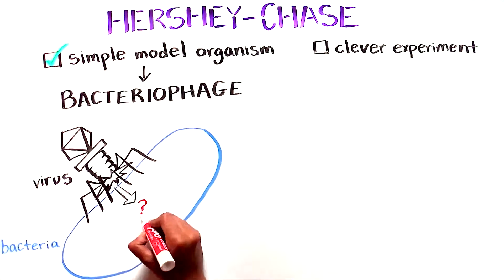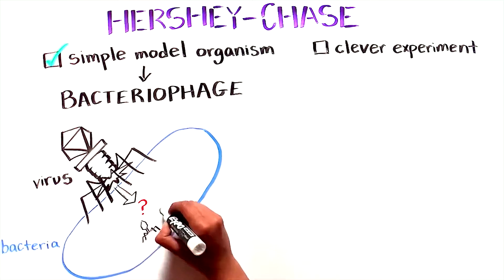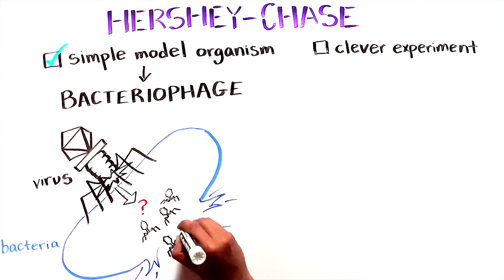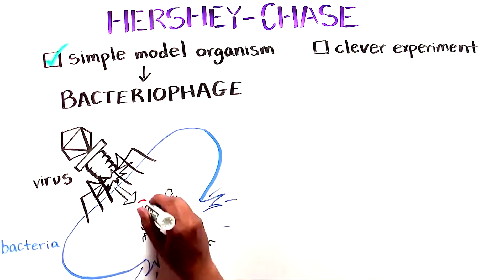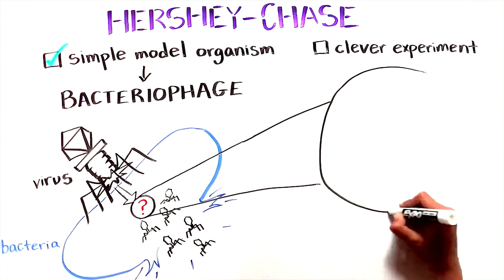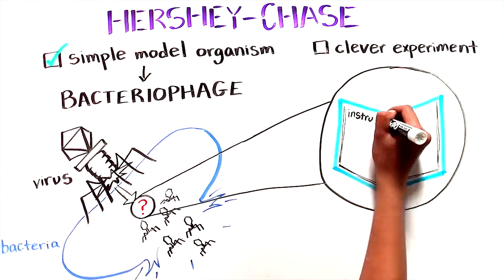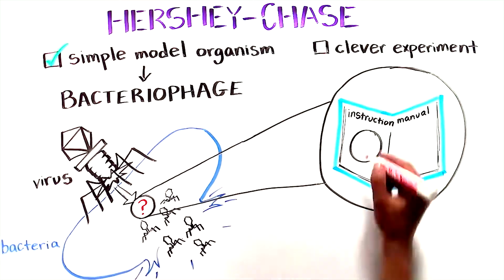It then injects a substance into the bacteria to create many new copies of the virus. These newly manufactured viruses are released when the bacteria bursts. So the substance injected inside of the bacteria must contain the instruction manual for making new virus. It contains the hereditary material.